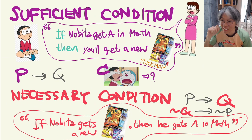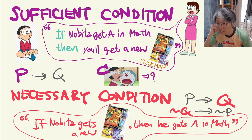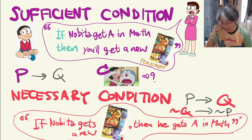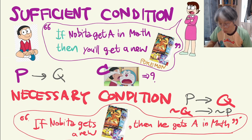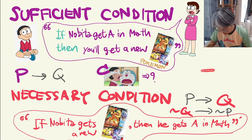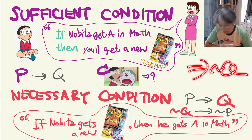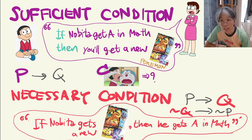Now let's check if you understand this correctly. What happens if Nobita gets a C, not an A? Does it mean he will not get a new card? The answer is: we don't know. If he doesn't get an A in math, that is not conclusive to say that Q doesn't hold. He may or may not get a new card if he doesn't get an A.